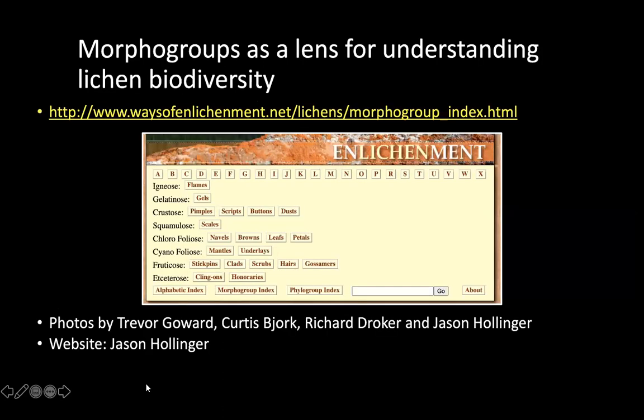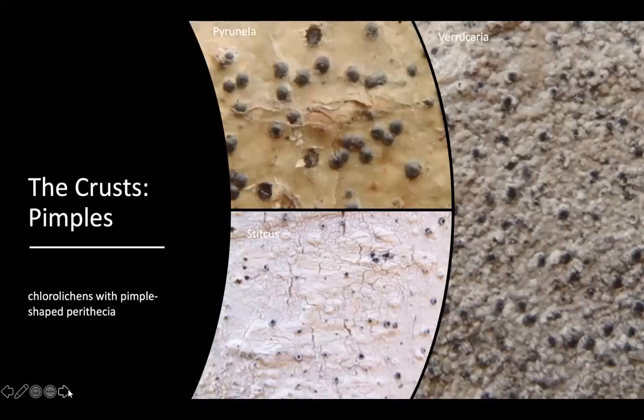I wanted to turn your attention back to something we discussed in Fall Quarter of Fungal Kingdom, which is the Ways of Enlightenment website and the Morpho Group Index, a really nice way of organizing lichens based on their growth forms. Here we can see the category of crusts broken up as pimples, scripts, buttons, and dust. There are great photographs here to help you as you're learning to identify crust.